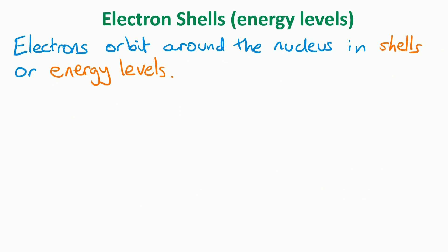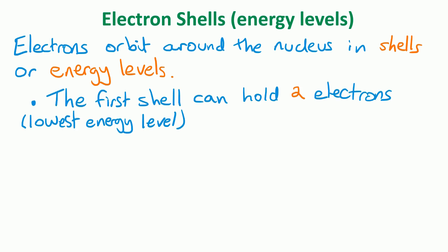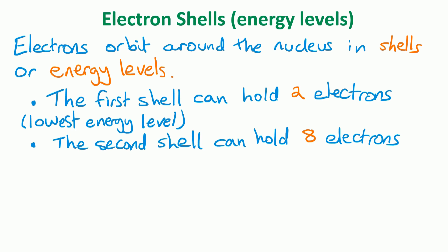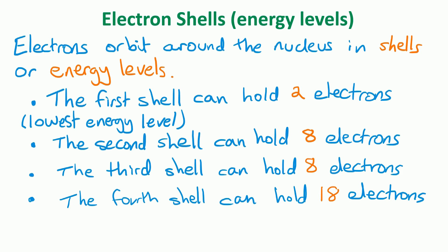Electron shells can also be called energy levels, and the electrons orbit around the nucleus in those shells or energy levels. There are certain rules we need to remember when drawing the electronic structures of atoms — how many electrons can fit on each shell. The first shell, nearest the nucleus, can hold 2 electrons. The second shell can hold up to 8, the third shell up to 8, and the fourth shell up to 18. So remember those numbers: 2, 8, 8, 18.